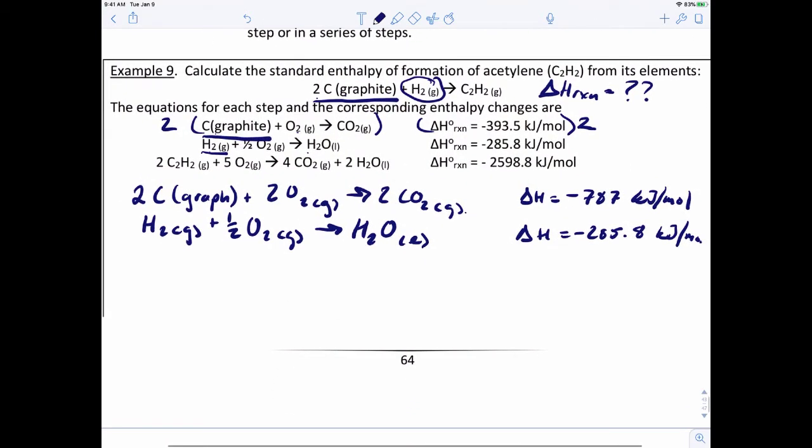Now here's the third step. We need acetylene to be the product. We have acetylene in the reactant, but we've got two moles here in this reaction. We need one mole. And also acetylene is a reactant, we need it to be a product.